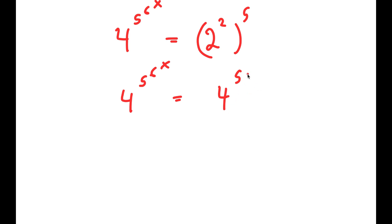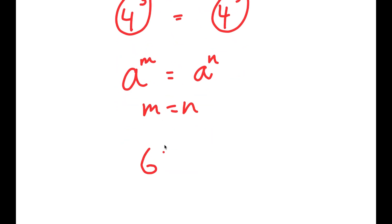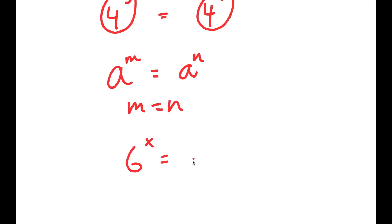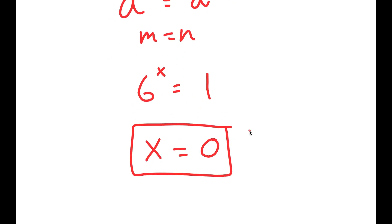Now, 4 to the power of 5 is the same thing as 4 to the power of 5 to the power of 1. Notice how we have 4 to the power of 5 on both sides. If I have something of the form a to the power of m is equal to a to the power of n, this means that m is equal to n. Here a is 4 to the power of 5. So 6 to the power of x equals 1, meaning x is equal to 0 because 6 to the power of 0 is 1.